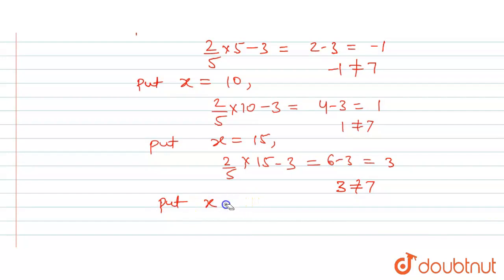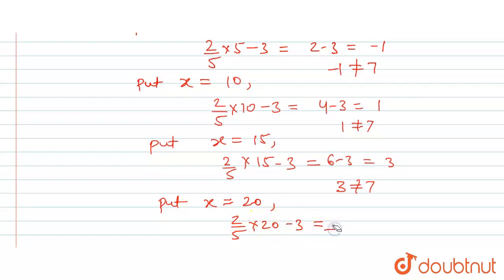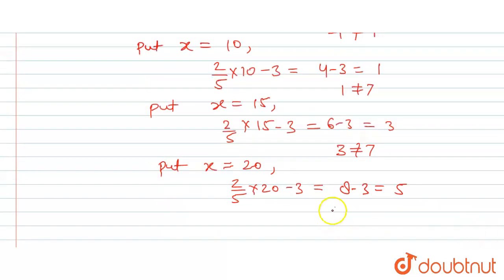Now we will put x equal to twenty. Two upon five into twenty, minus three — twenty cancels with five to give four — so four into two is eight, minus three equals five. Five is not equal to seven, so this is not a solution.